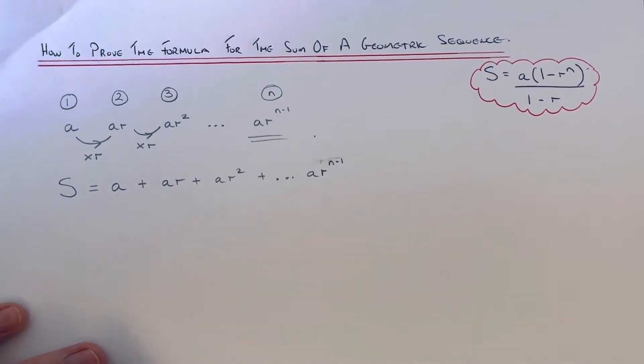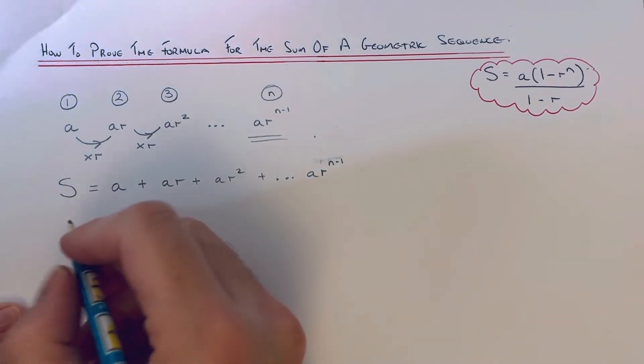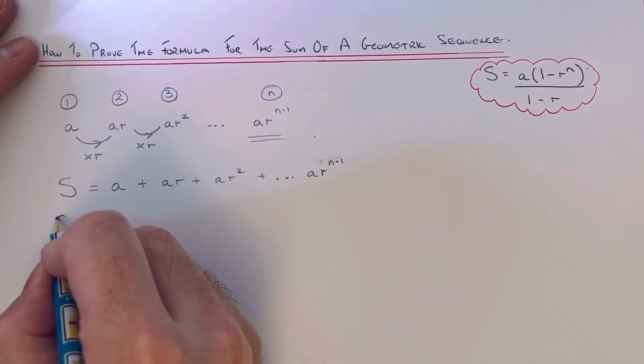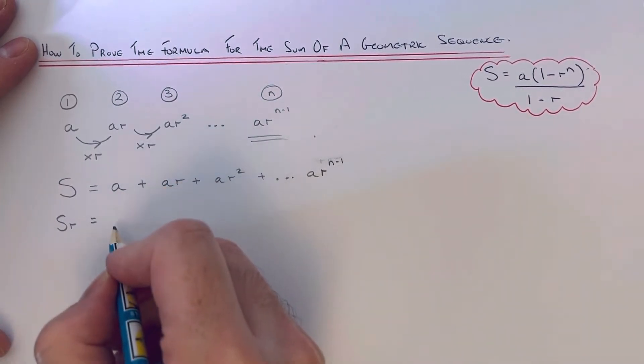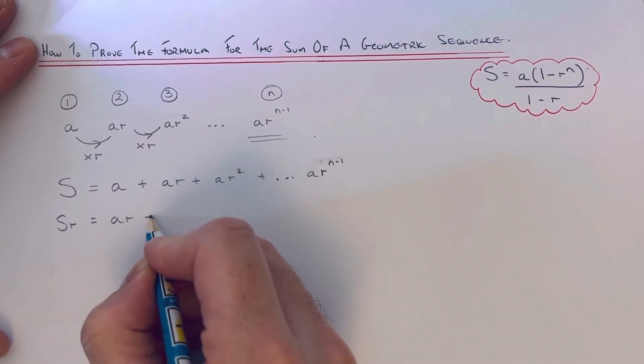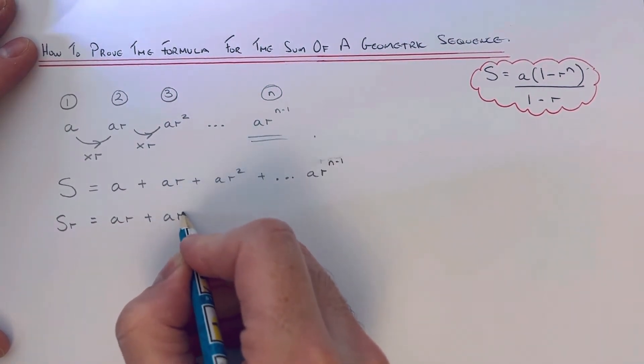So I'm going to times both sides by r. So S times r would be Sr. We're going to times this one by r to make it ar.